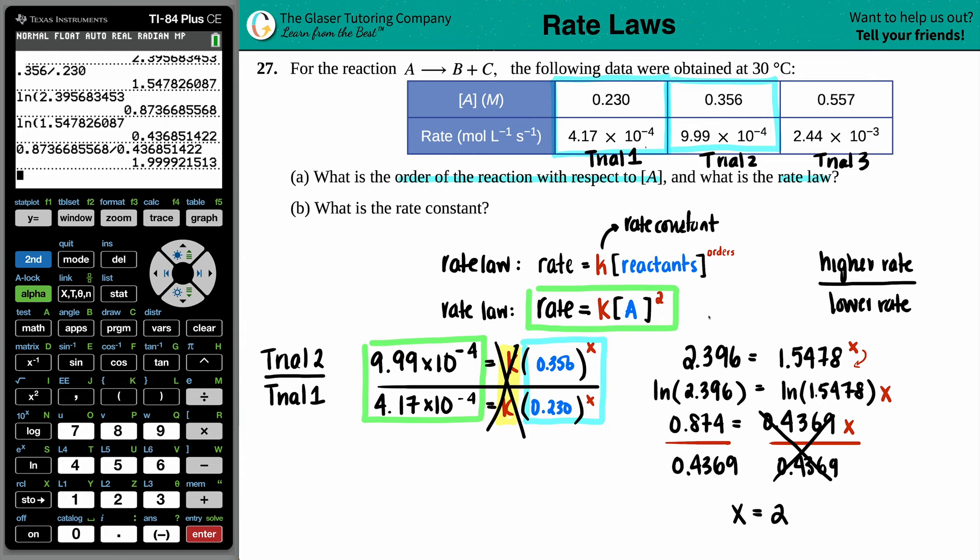And now they said, what is the order with respect to A? The order with respect to A is just that number. Order with respect to A is basically a fancy way for saying, what is A's order? Well, we just found out that A's exponent, which is the order is second order. It's a number two. So that's the answer to the second part. Oh yeah. And now we're moving on to B.